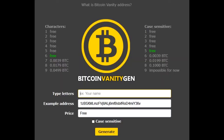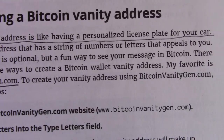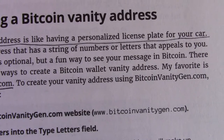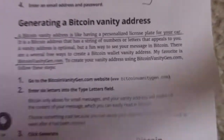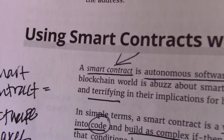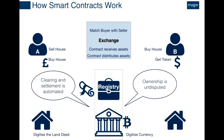A Bitcoin vanity address is like having a personalized license plate for your car. Using smart contracts with Bitcoin — that's what a smart contract is.